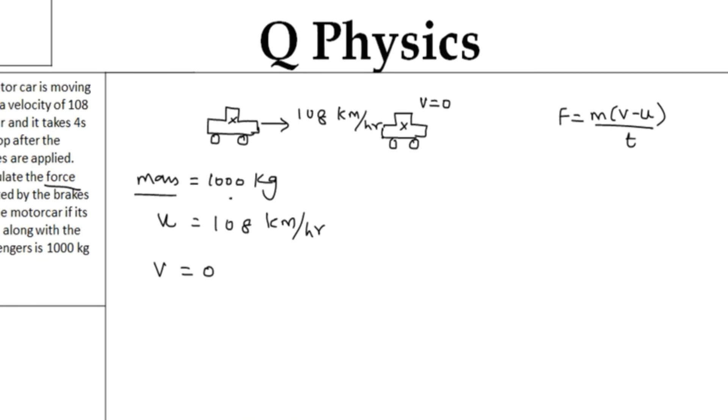Here mass is given in terms of kilograms, so no problem with this. But the initial velocity is given as 108 kilometer per hour. It has to be converted to meters per second. We'll do the conversion now.